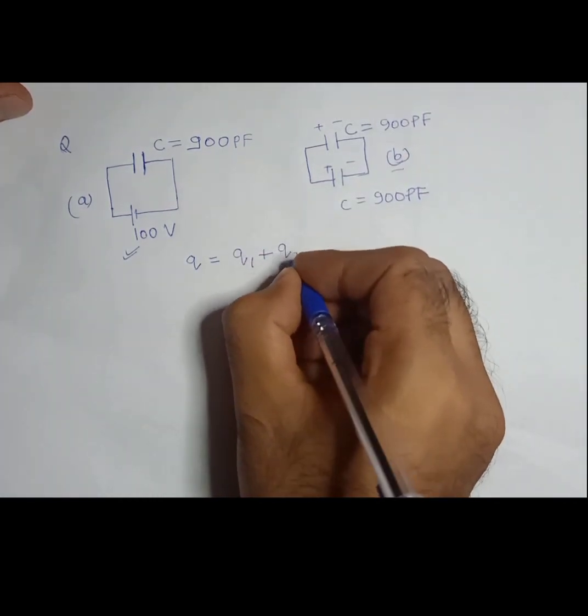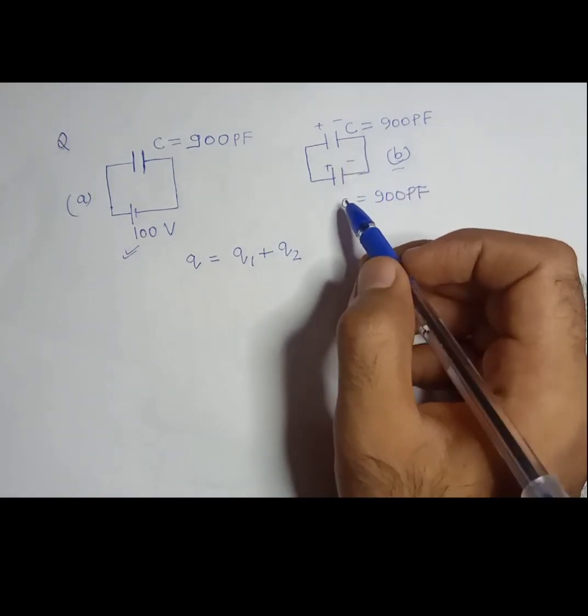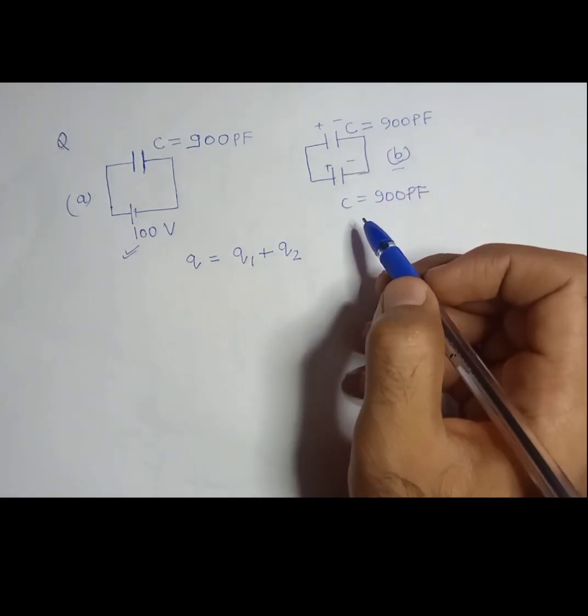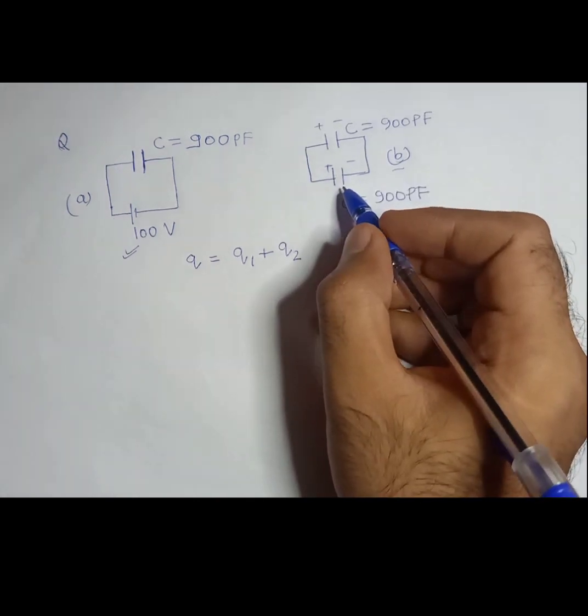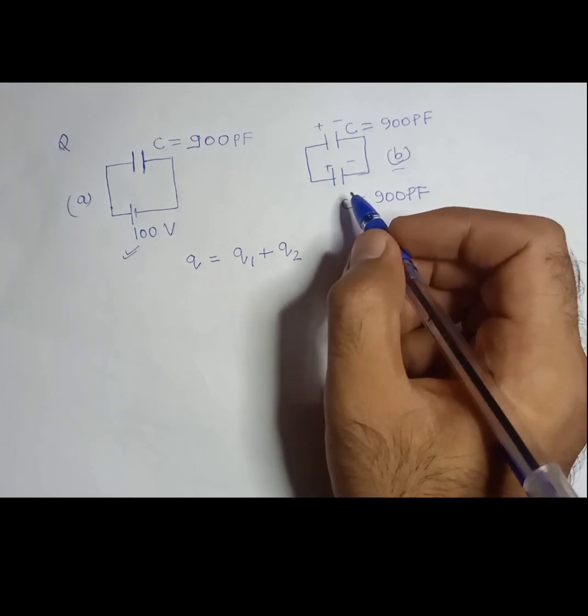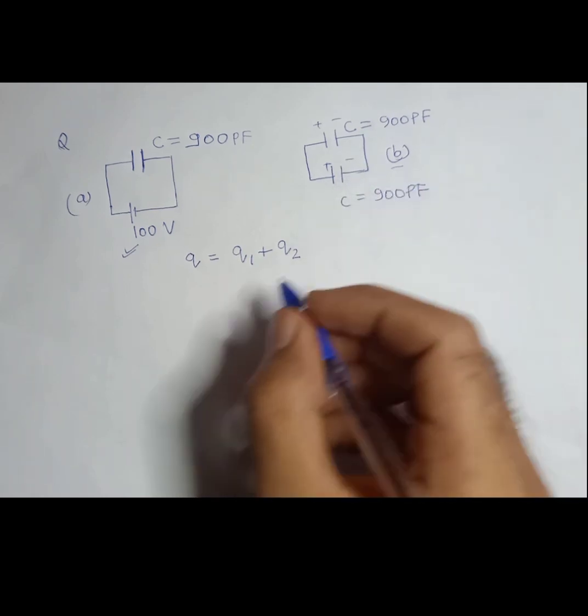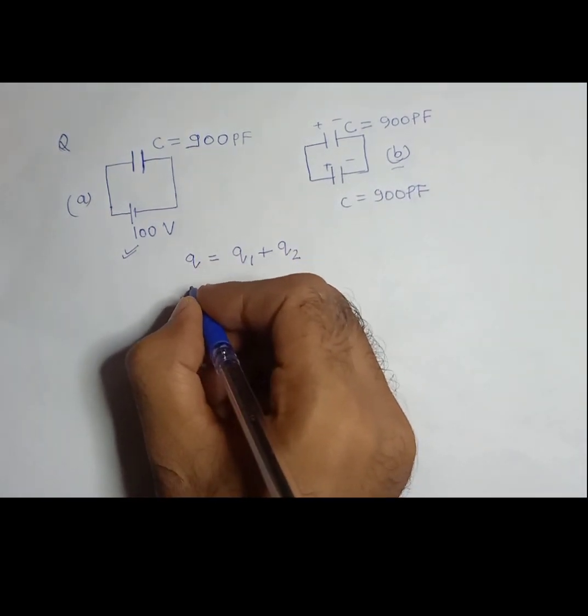So Q, whatever this battery is supplying, is going to be there. But charge is going to be transferred from the charged capacitor to the uncharged capacitor. How long until the uncharged capacitor attains the same voltage as the charged capacitor?